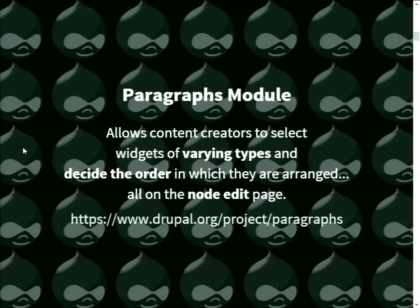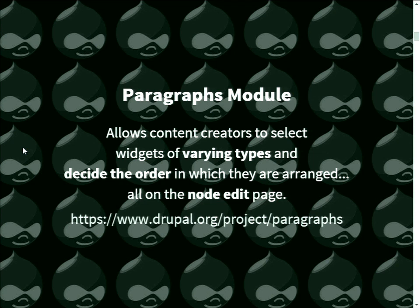I actually haven't had anything to do with the creation of the Paragraphs module itself, but all the other modules we'll see after this point are stuff we've been working on. The name 'Paragraphs' is a little misleading — you might want to think of it as chunks of information or widgets. It allows content creators to place widgets of varying kinds onto the page and decide the order in which they appear. Crucially, it all occurs in the node edit form — there's no need to jump out into a panels-style configuration screen. This is one of the main advantages, giving editors a single interface to add their content.